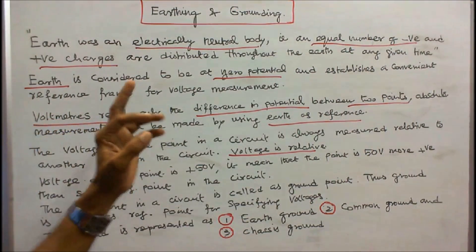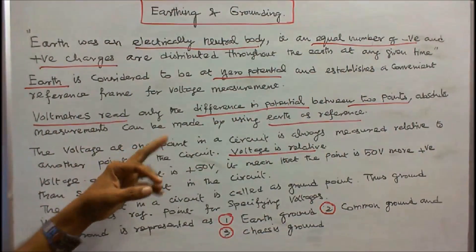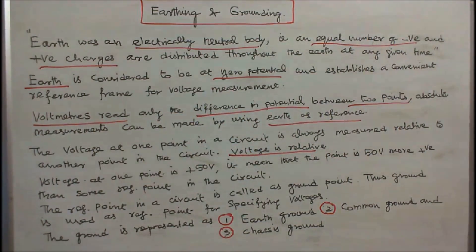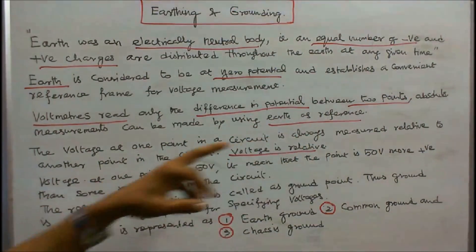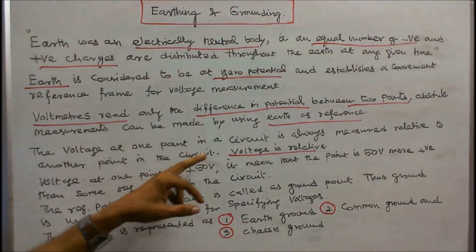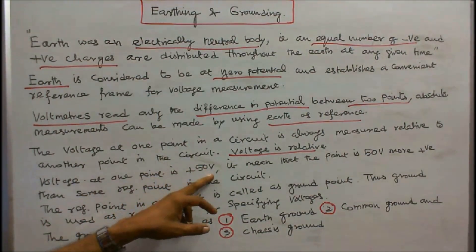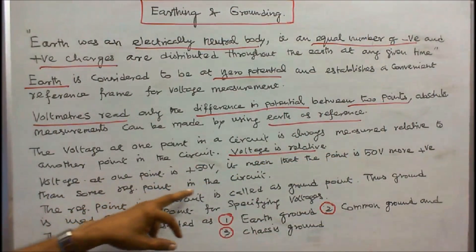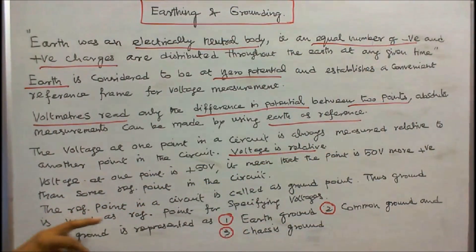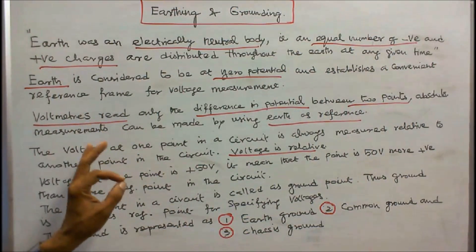Voltmeters read only the difference in potential between two points. Absolute measurements can be made by using earth as reference. The voltage at one point in a circuit is always measured relative to another point in the circuit. Hence, voltage is relative. Voltage at one point is plus 50 volts. It means that the point is 50 volts more positive than some reference point in the circuit. The reference point in a circuit is called as ground point. Thus, ground is used as reference point for specifying voltages.